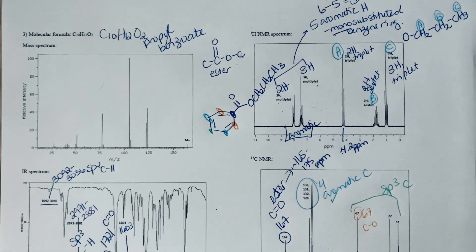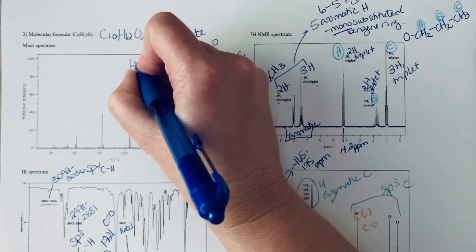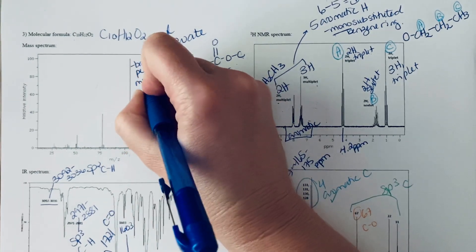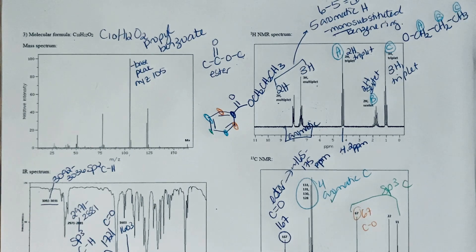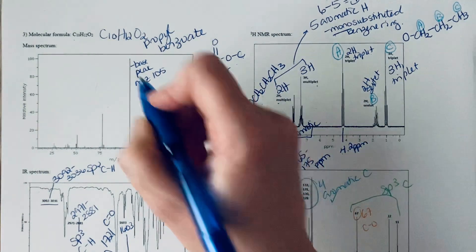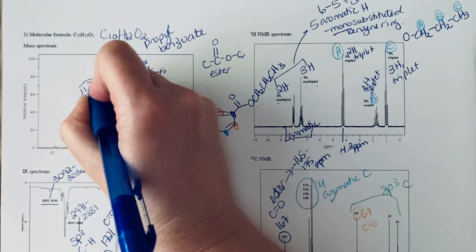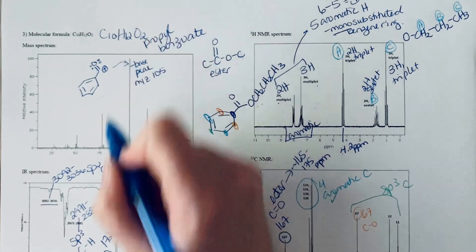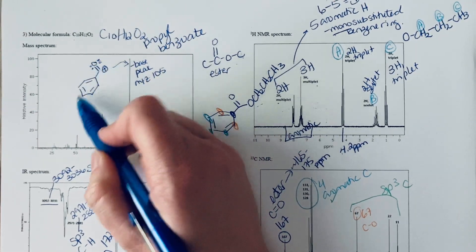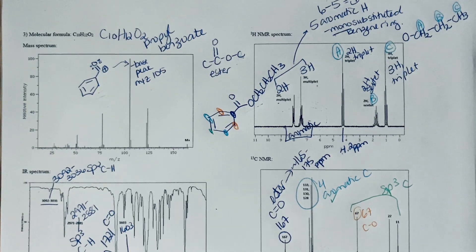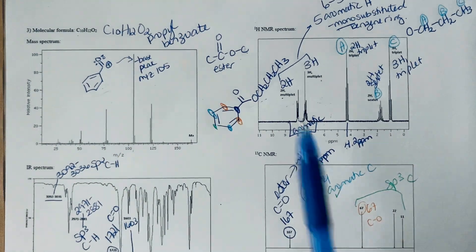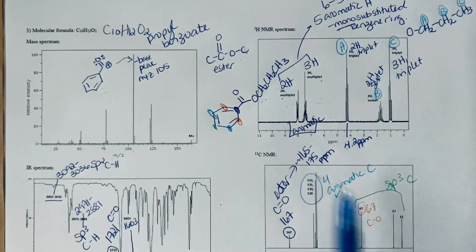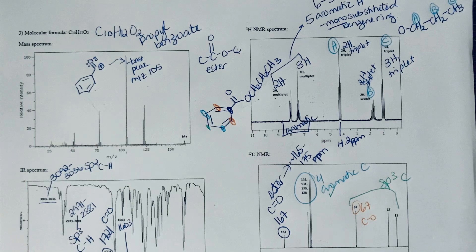We should at least make sure we can account for the base peak. Here is our base peak at 100% abundance, at an m/z value of 105. That looks like you're losing this entire propoxy group. This is a resonance-stabilized acylium ion. This corresponds to the base peak. Now we've verified that everything matches: we've got an ester with a benzene ring, an alkane portion. We can be pretty confident in identifying our unknown.